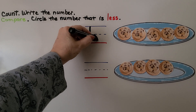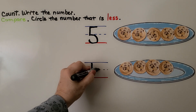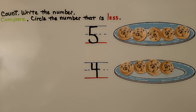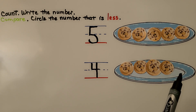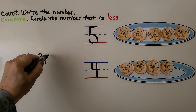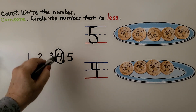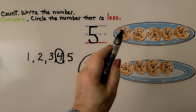Come down and around, and then we put the top part. We can count these cookies: one, two, three, four. We can write the number four. We can compare the numbers. We need to circle the number that is less. We can look at the cookies and see this plate has less cookies than this plate — it has one less. When we count one, two, three, four, five, the number four comes before the number five. That's the lesser number. There are less cookies on this plate than on this plate.